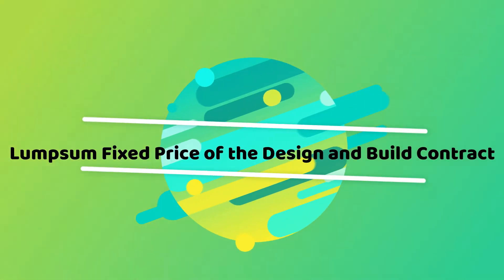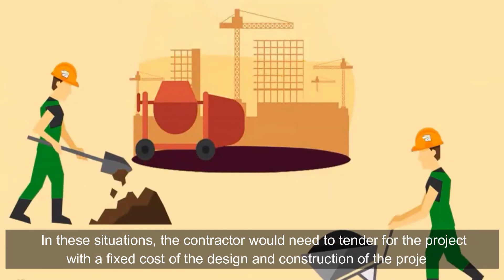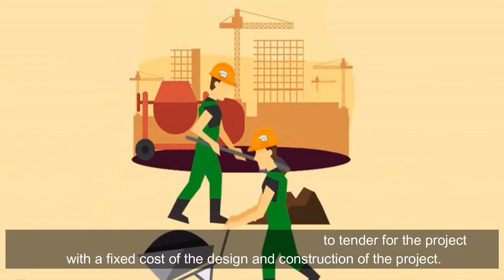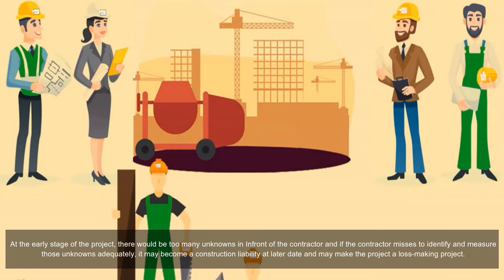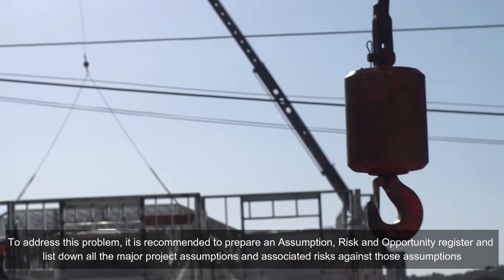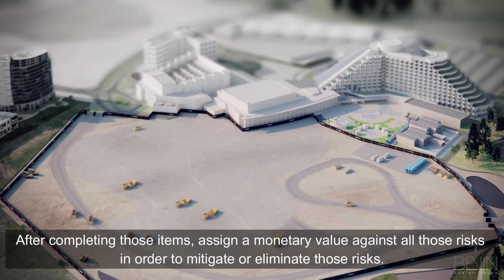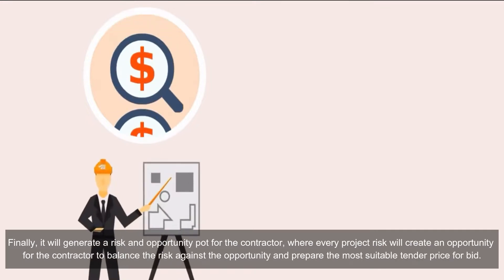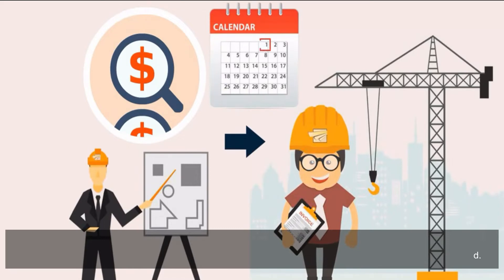Lump sum fixed price: some design and build contracts come with a lump sum fixed contract option. In these situations, the contractor would need to tender for the project with a fixed cost of the design and construction at the early stage, where there would be too many unknowns. If the contractor fails to identify and measure those unknowns adequately, it may become a liability at a later date. It is recommended to prepare an assumption, risk, and opportunity register, list all major project assumptions and associated risks, assign a monetary value against those risks, and prepare the most suitable tender price.